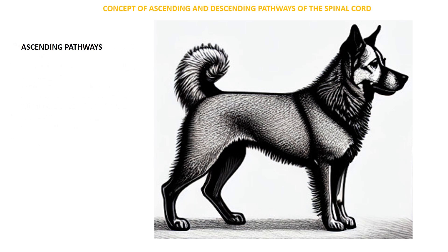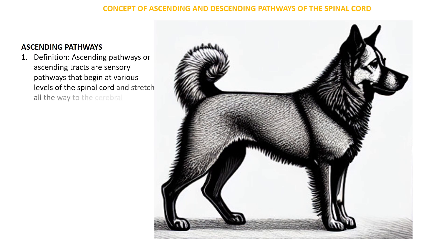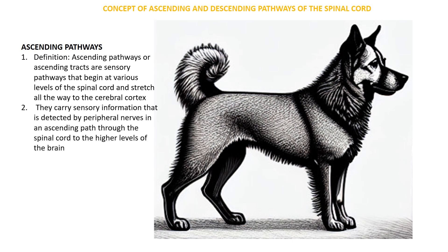The ascending pathways, or ascending tracts, are sensory pathways that begin at various levels of the spinal cord and stretch all the way up to the cerebral cortex. They carry sensory information detected by peripheral nerves. Normally, nerve endings throughout the animal's body detect stimuli from either the internal or external environment, and this information travels in an ascending path through the spinal cord to the higher levels of the brain.